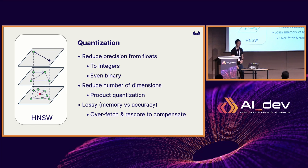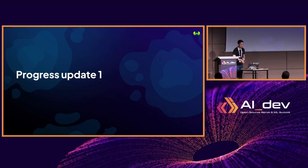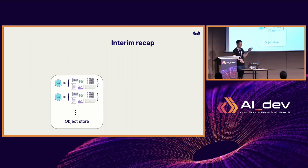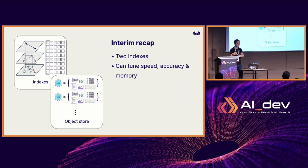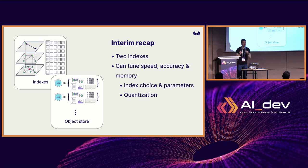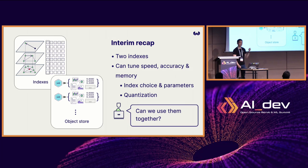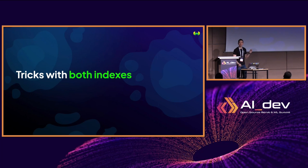We're about 15 minutes in and we've done a lot. We started with an object store, and we've got these indexes. Now we can tune different trade-offs of speed, accuracy, and memory with these knobs of index choice, parameters, and quantization. Now the user says: I've noticed you've got these two indexes — that's really cool. Can we use them together to do something? It turns out there are things you can do when you have those two indexes that are very, very cool.